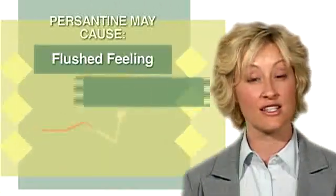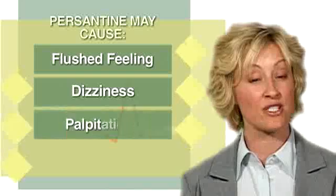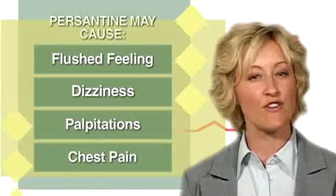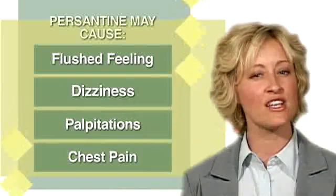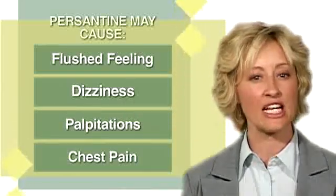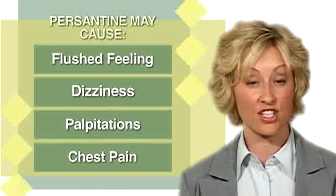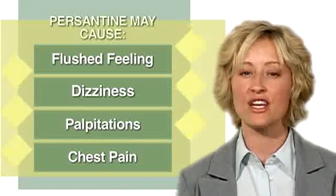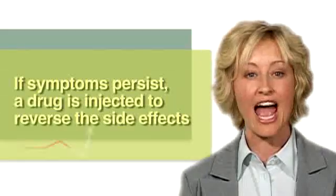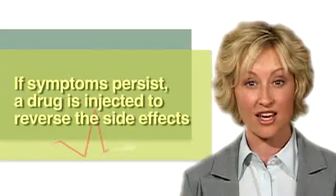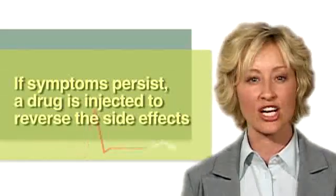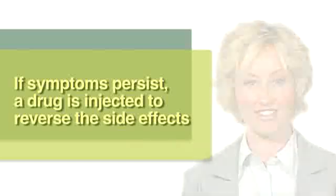Persantine may cause a flushed feeling, dizziness, palpitations, or chest pain. If you experience any of these symptoms at any time during the test, you must immediately tell the individual monitoring the test so that adjustments can be made. If the symptoms continue to worsen and persist, a drug is injected to reverse significant side effects.